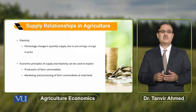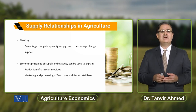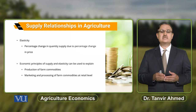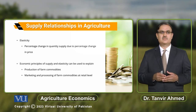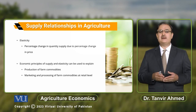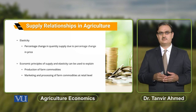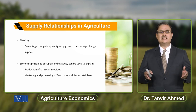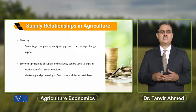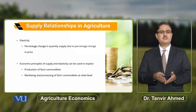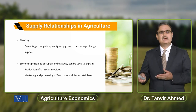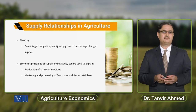These principles of supply and elasticity will be used to explain the production of farm commodities and for the marketing and processing of farm commodities at the retail level. Basically, the supply relationships we studied in economic theory — we will discuss their application with reference to agricultural output.